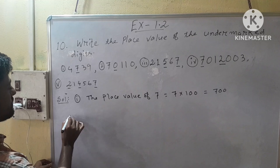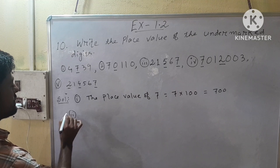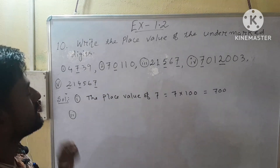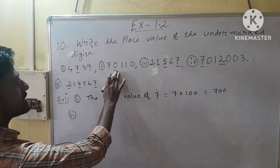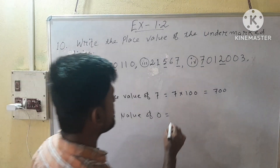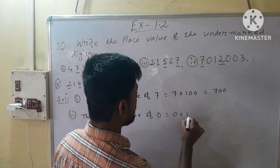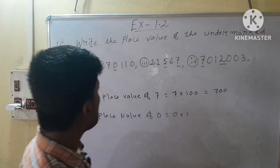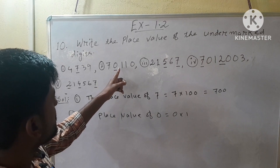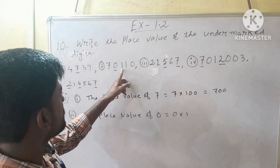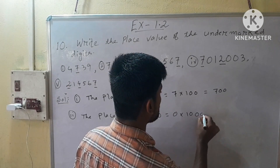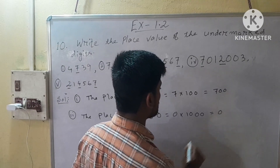Roman number 2 — here we have to find the place value of 0, because 0 is undermarked. Place value of 0 is equal to 0 into 1. After zero we have here 3 digits, so we have to put here 3 zeros. So our result will be 0.